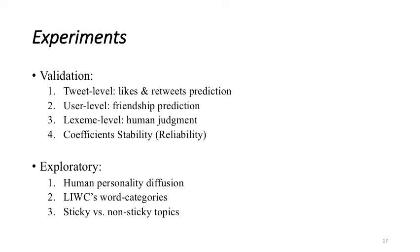Now let's jump into the experiments. Totally we conducted seven experiments around CLD coefficients. Four of them are for validation purpose where we consider the predictive validity and reliability of the CLD coefficients over tweet level tasks like to predict the number of likes and number of retweets, user level tasks to predict the friendship connection and a lexeme level task to compare the human judgment of diffusion. And also an assessment of the stability of the coefficient as a lexical property by comparing its calculation over two independent training sets of users' network and their tweets.